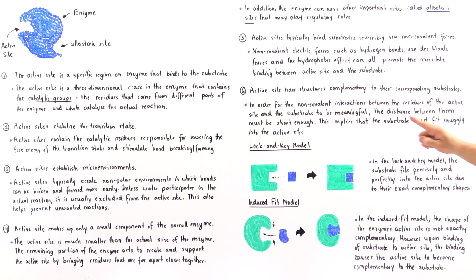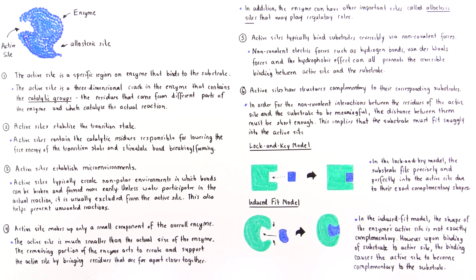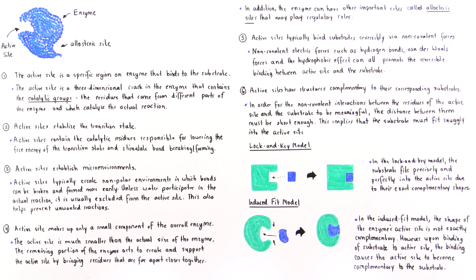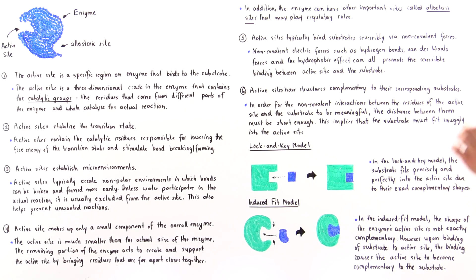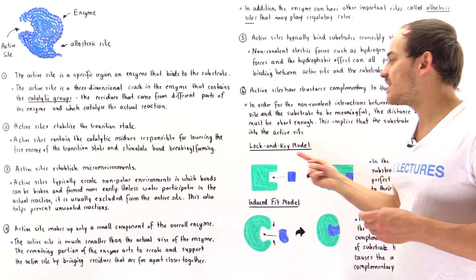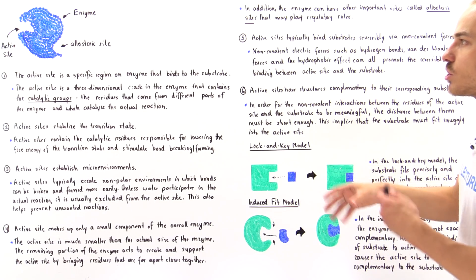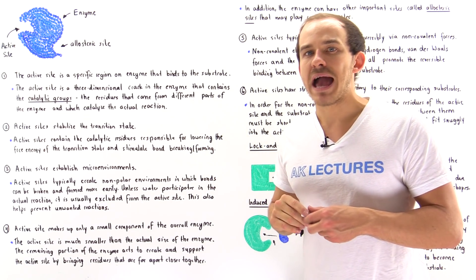Property six: active sites have structures complementary to their corresponding substrate. In order for the non-covalent interactions between the residues of the active site and the substrate to be meaningful and strong enough, the substrate must fit snugly into the active site of that particular enzyme. Two models are generally used to describe the way binding between the substrate and the active site actually takes place.